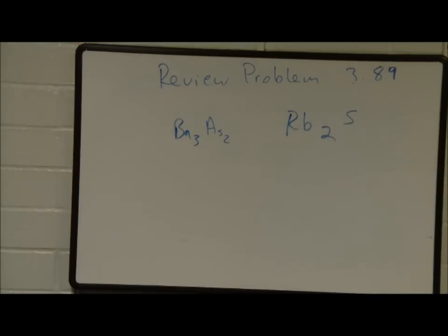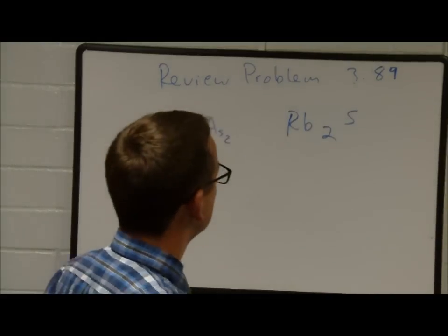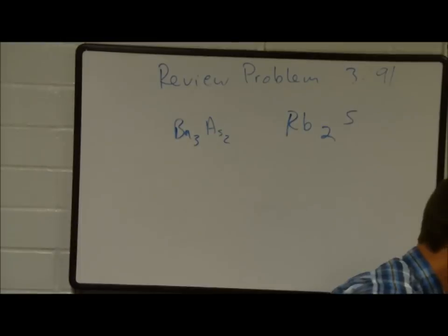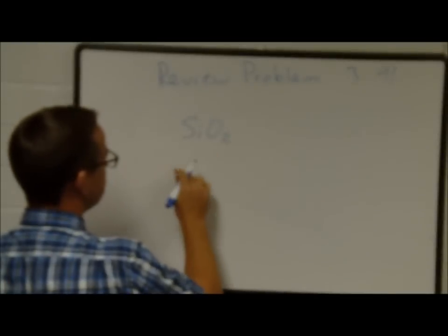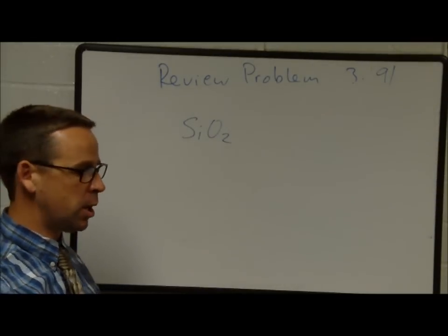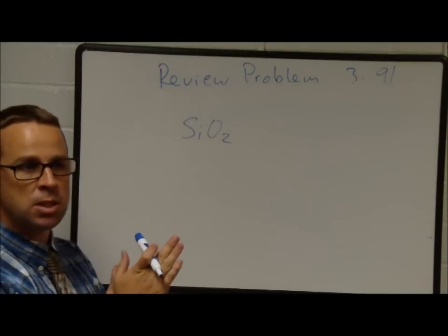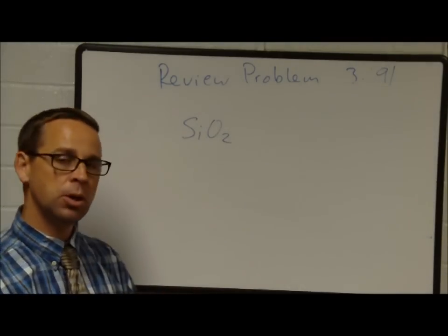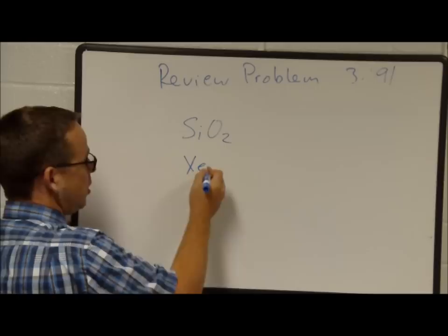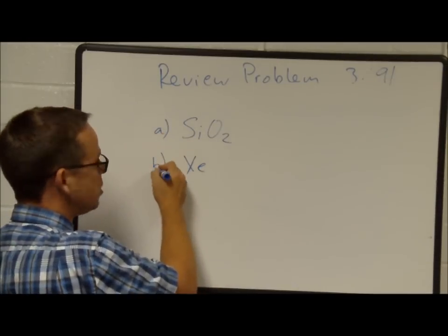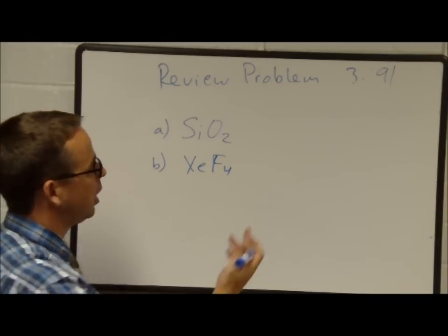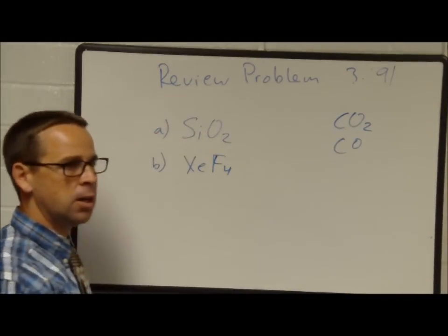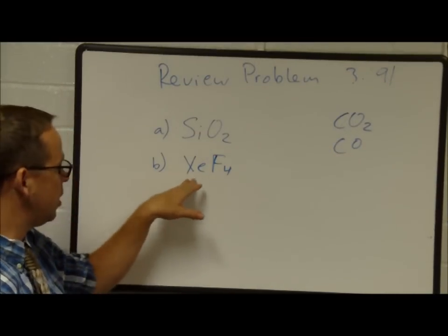Problem 391: Name the following molecular compounds. SiO₂ — silicon and oxygen are two non-metals coming together, so we use the mono-di-tri naming system. This is silicon dioxide. XeF₄ is xenon tetrafluoride — 'tetra' for four fluorines. We name it the same way as carbon dioxide or carbon monoxide.